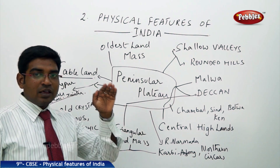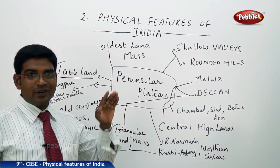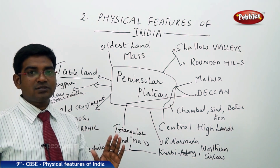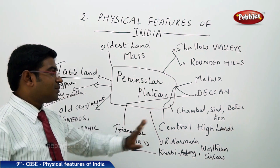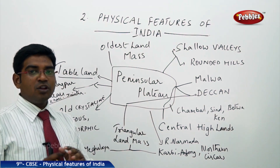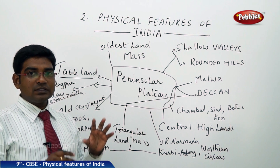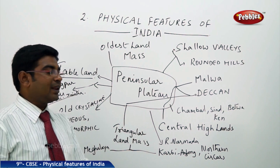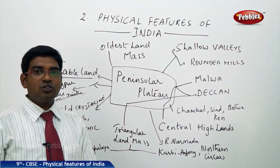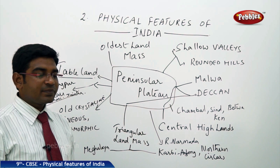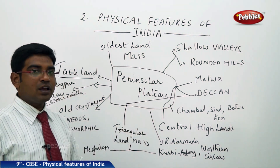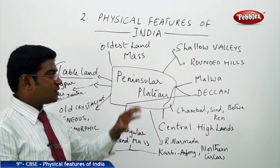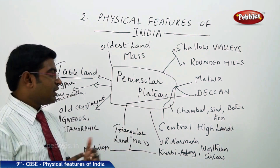Moving southward, the rivers that flow in the Central Highlands include the Chambal, Sindh, Betwa, Ken, and River Narmada, which also flows through the Malwa Plateau or Central Highland region.